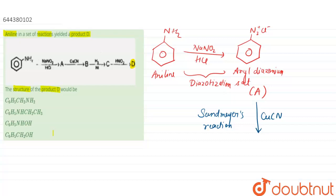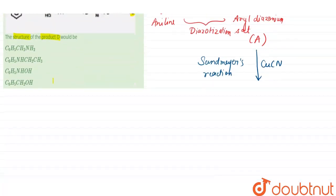This aryl diazonium salt in presence of CuCN is known as Sandmeyer's reaction, which leads to the formation of benzonitrile, which on hydrolysis in presence of water gives benzenamide. Now it will form benzonitrile, that is benzene ring with a CN group.